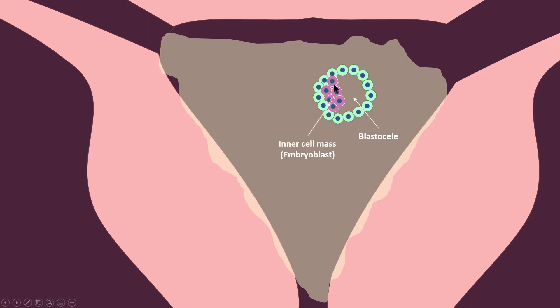This inner cell mass we call embryoblast. And the peripheral cell or outer cell mass we call trophoblast. And this pole of the embryo that is having the inner cell mass is called embryonic pole. And the opposite is called abembryonic pole. And the early embryo at this stage is called blastocyst.